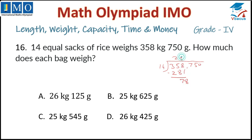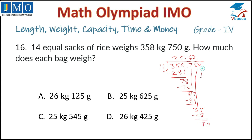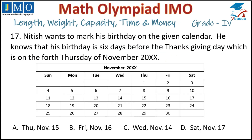14 fives are 70, carrying forward — 14 sixes are 84. Continuing the long division with the decimal digits: 14 twos are 28, drop down, 14 fives are 70. The answer is 25 kg and 625 grams. That is option B, so tick option B. Let us move to the next question.